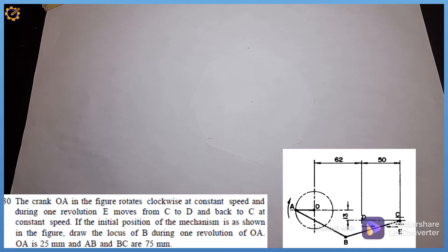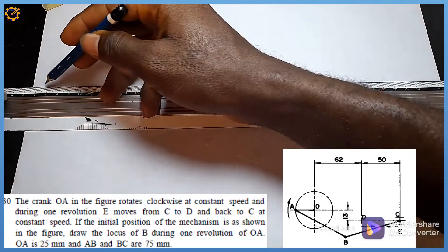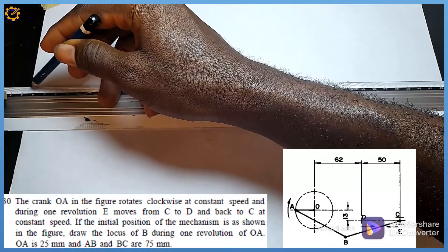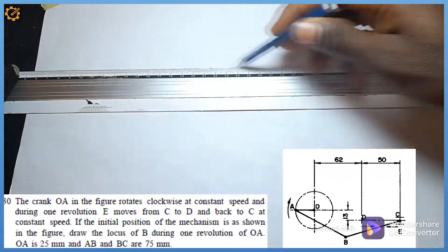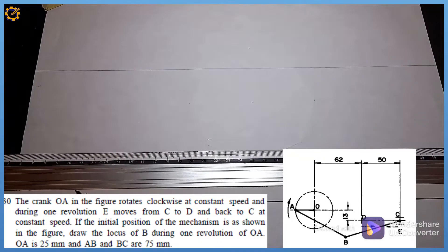Draw the locus of B during one revolution of OA, if OA is 25 centimeters and BC and AC are 75 centimeters. The very first thing I'm going to do is produce a thin horizontal line in this order.